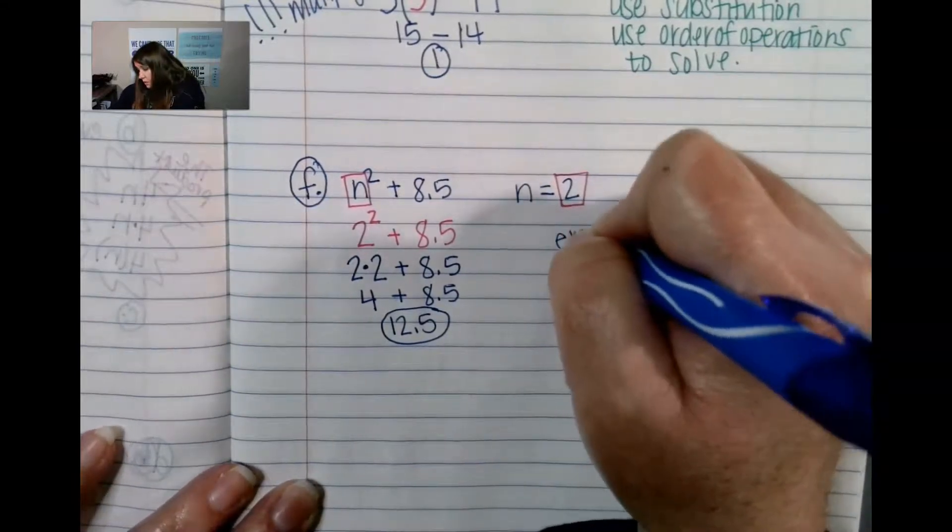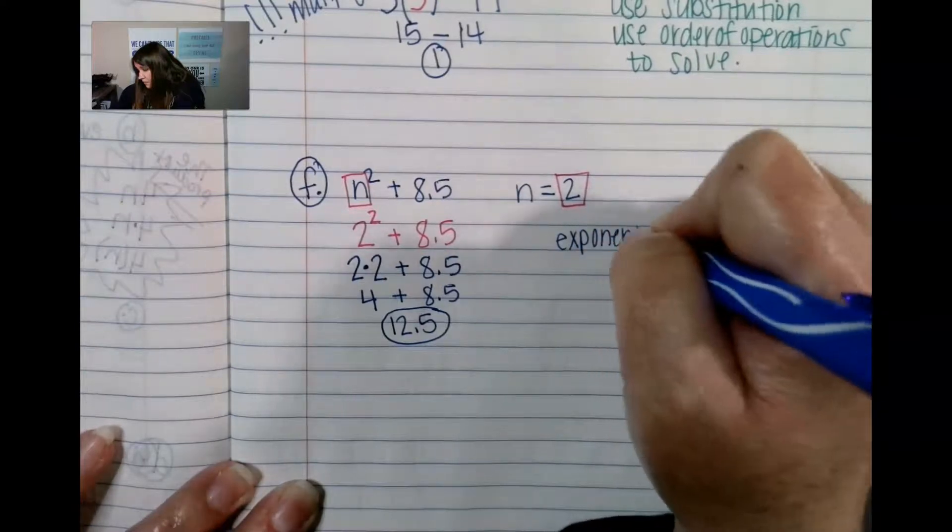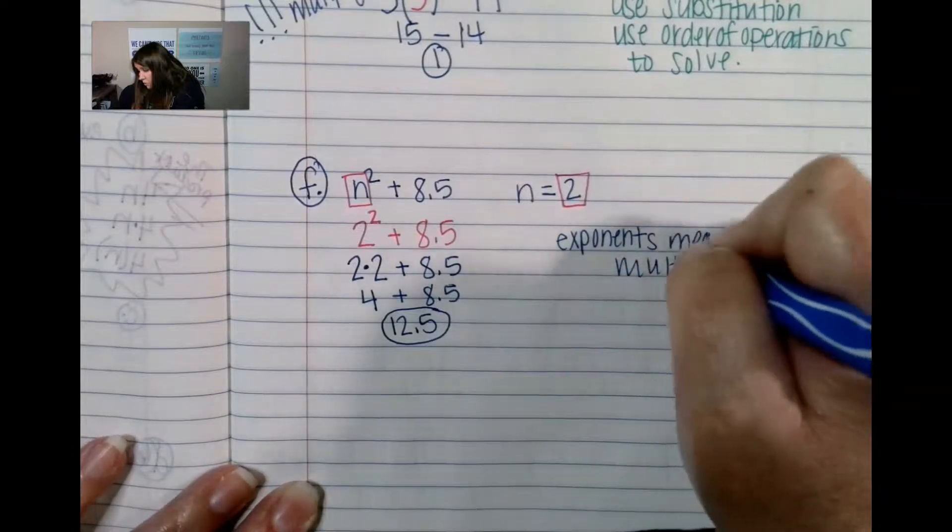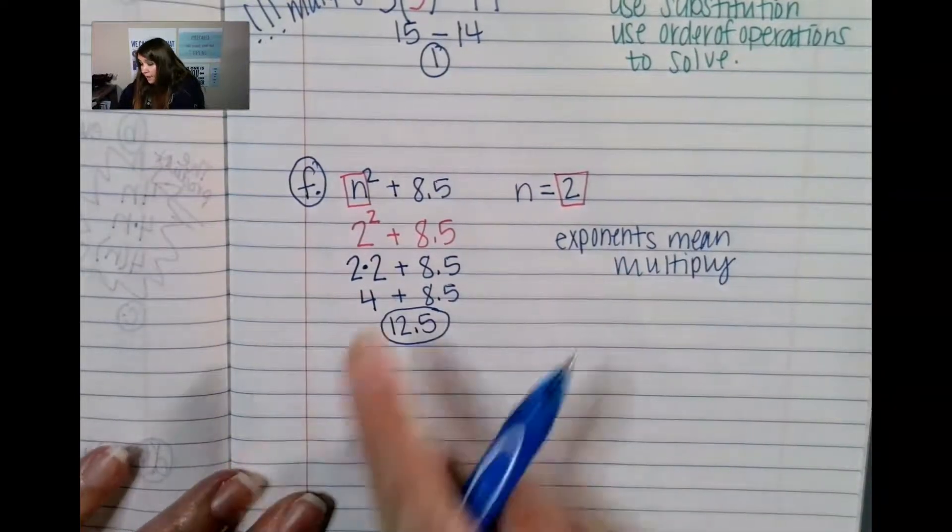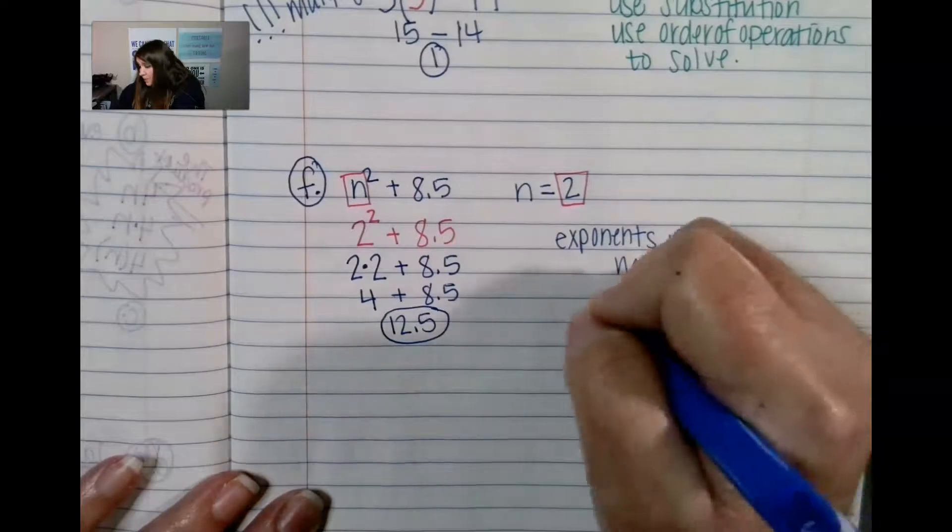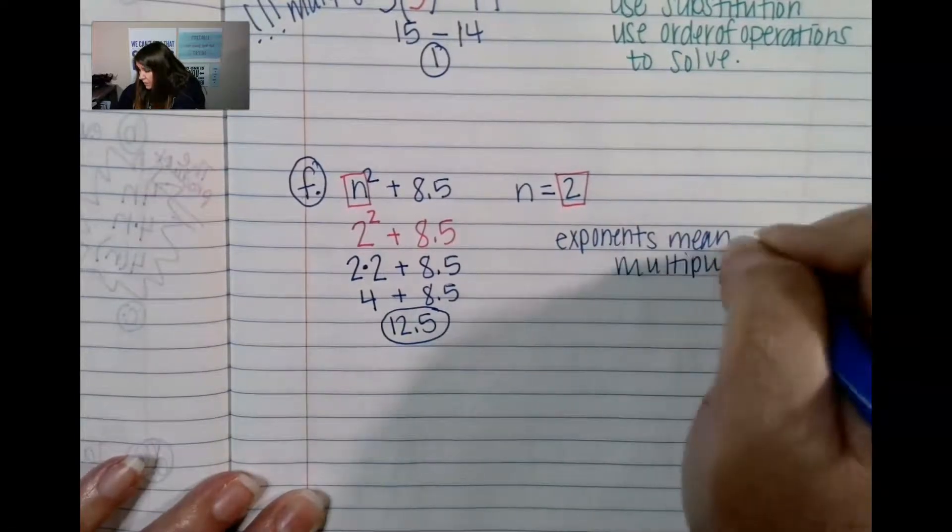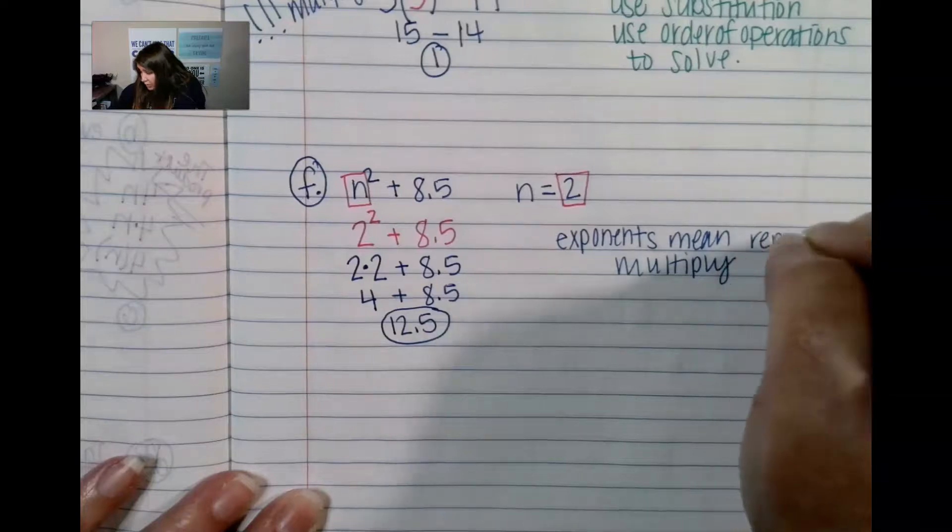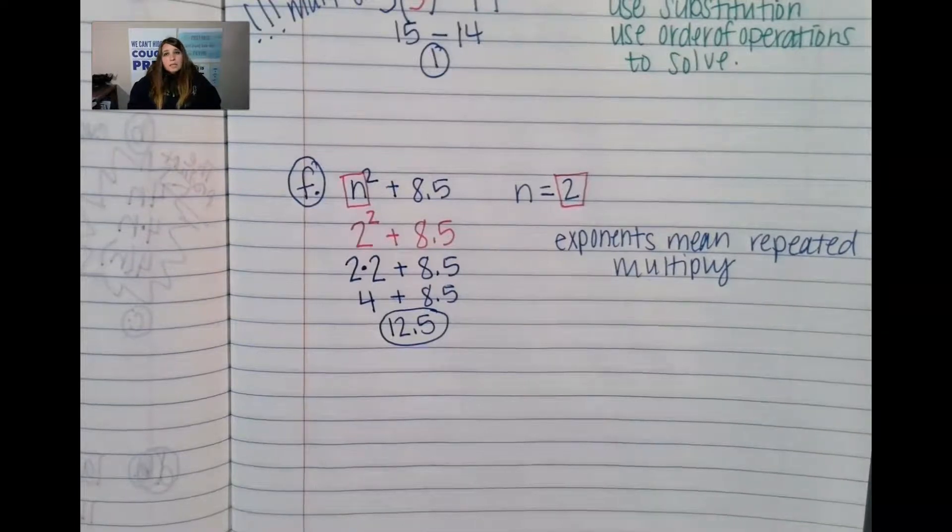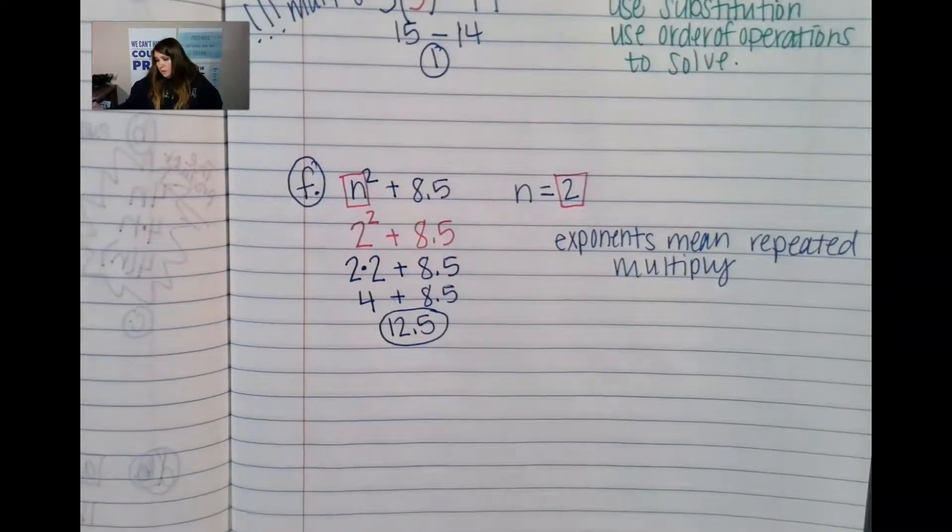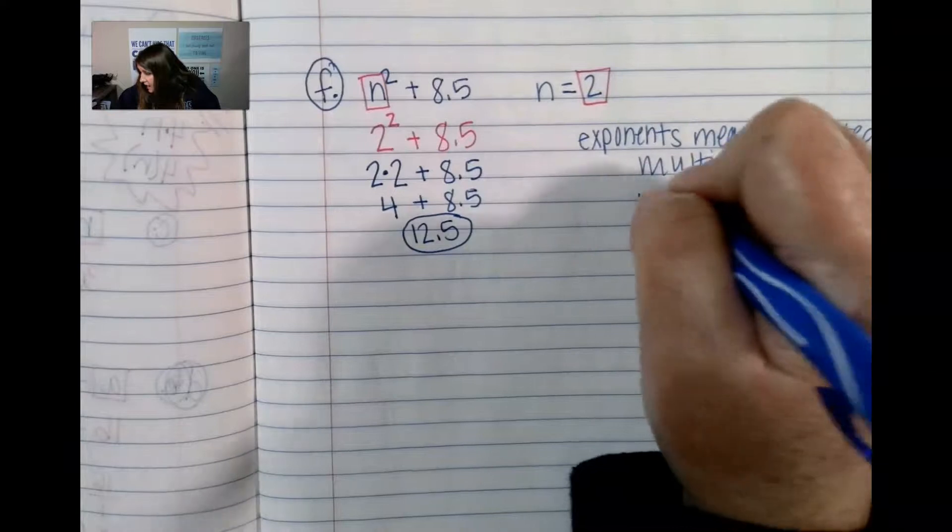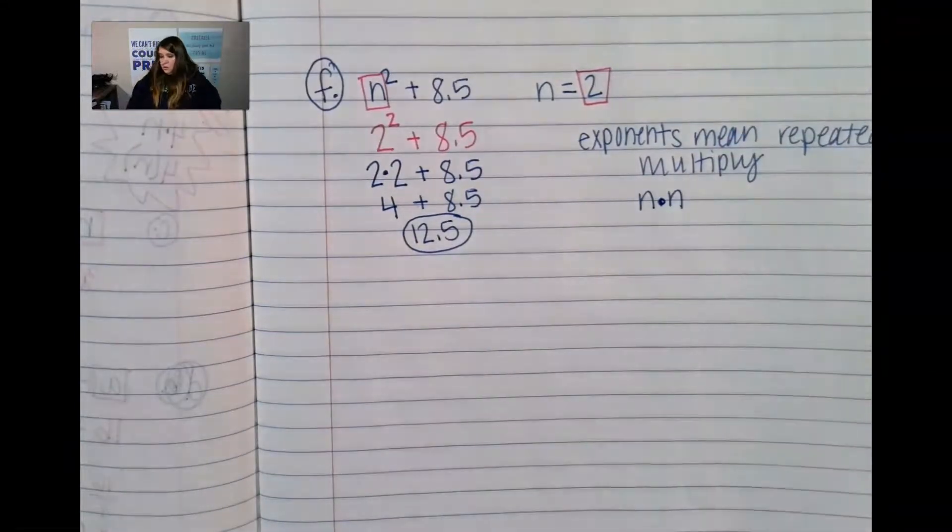So, exponent. Do not multiply the 2 to the 2 like that. Or if this was a 3, it's not 3 times 2. It's repeated, right? Exponents mean repeated. It means to repeatedly multiply. So, write yourself a note there so you don't forget. So, this is like N times N.